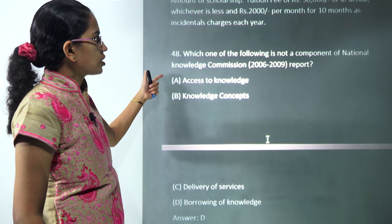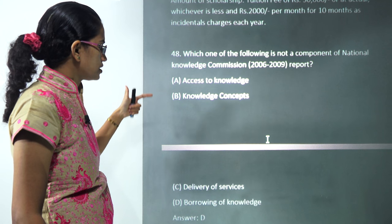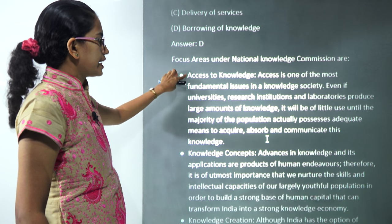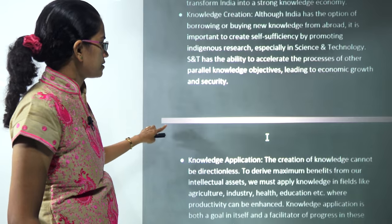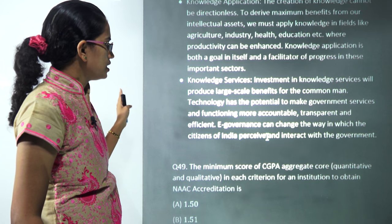The next question: which is not a component of National Knowledge Commission? Access to knowledge, knowledge concepts, and delivery of services are all the concepts. Under the concepts we have access to knowledge, knowledge concepts, knowledge creation, knowledge applications, and knowledge services. So the last one would be the incorrect option here, that's borrowing of knowledge is not mentioned.